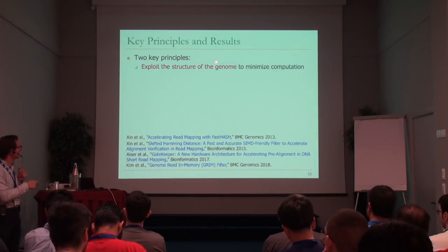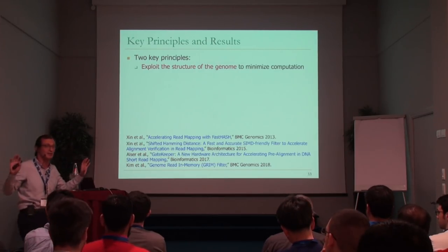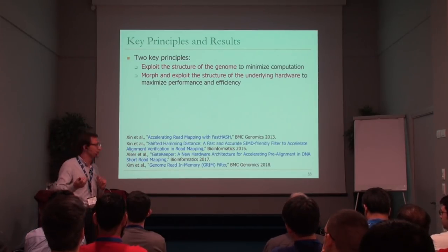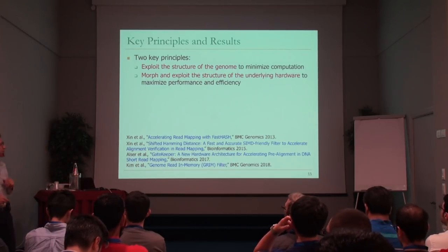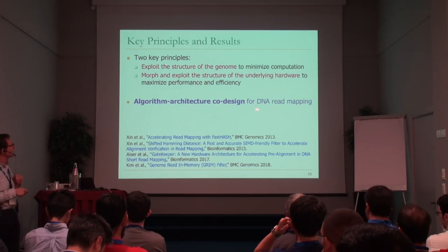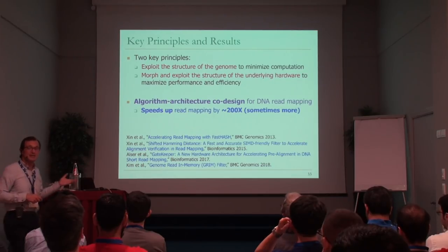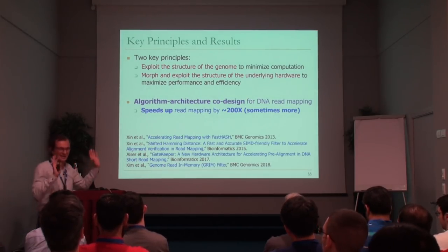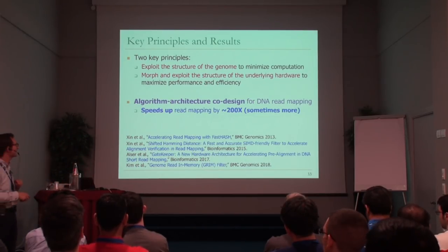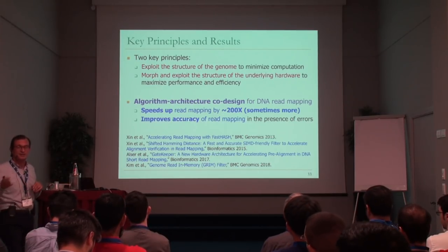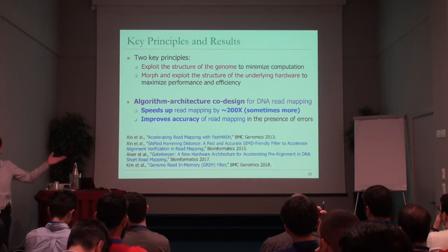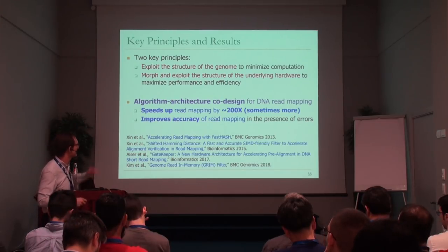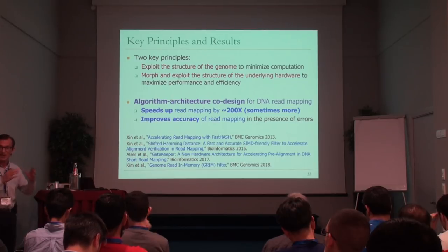We follow two key principles: first, exploit the structure of the genome to minimize computation — a software algorithmic principle. Second, exploit the structure of the underlying hardware to maximize performance and efficiency — essentially acceleration in memory, in FPGA, in SIMD, ideally combining all of those. It's really algorithmic-architecture co-design for DNA read mapping. This speeds up read mapping by about 200x with real data sets, sometimes more, sometimes less depending on your data set and the value of E.